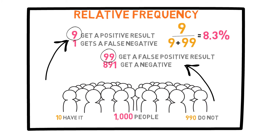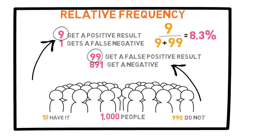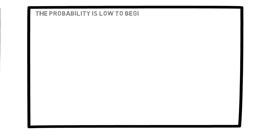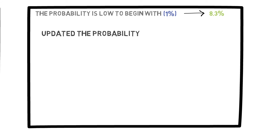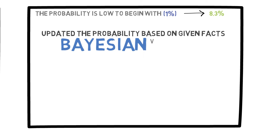This might be surprising to most people because we said that the test is 90% accurate. But this probability is low because the probability of having the disease is low to begin with — in fact, only 1 out of 100 people, or 1%, have it. So with the new information, this probability jumps to 8.3%, which is still pretty low. Although the percentage went up, there is still a good chance that the test was simply wrong and you don't actually have the disease. My main point here is that, to solve this problem, we started with the probability of having the disease and then updated this probability to the probability of having the disease given that you had the positive test result. We updated the probability from 1% to 8.3%. This updating of probabilities demonstrates the Bayesian way of thinking about probability.